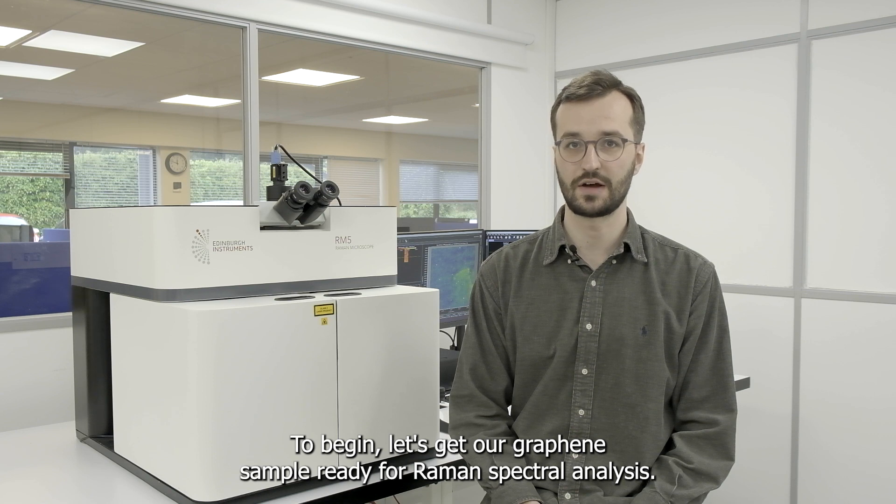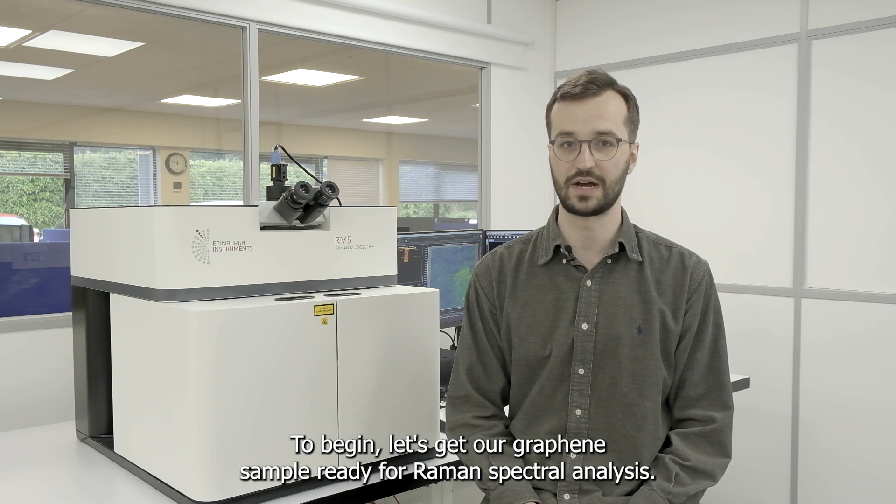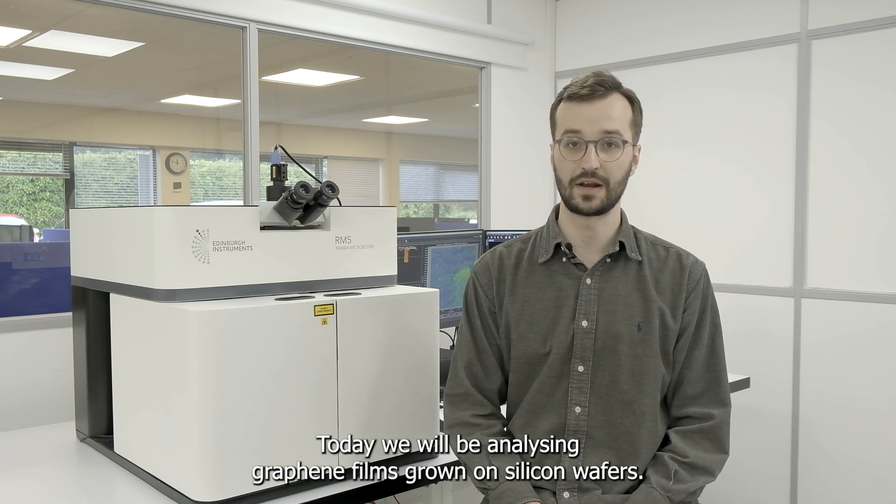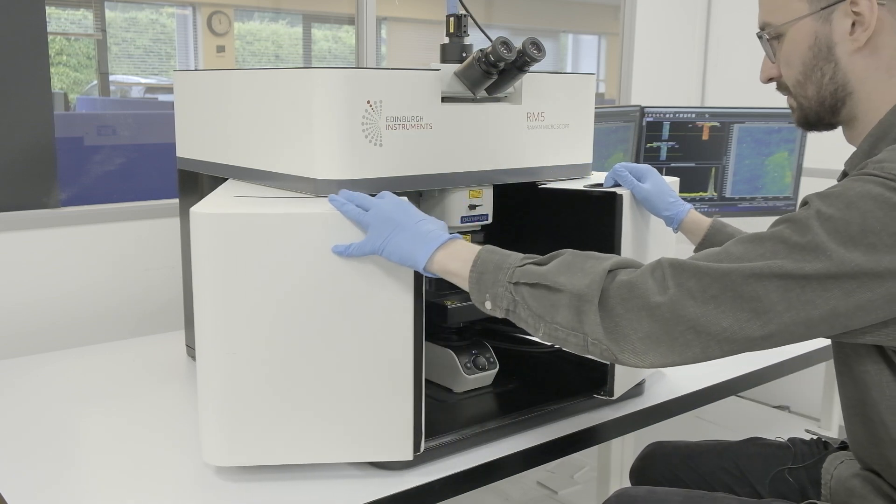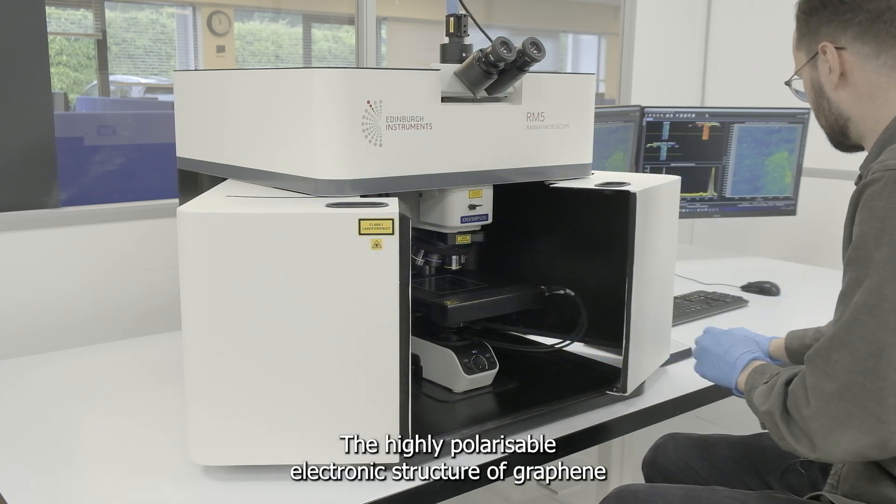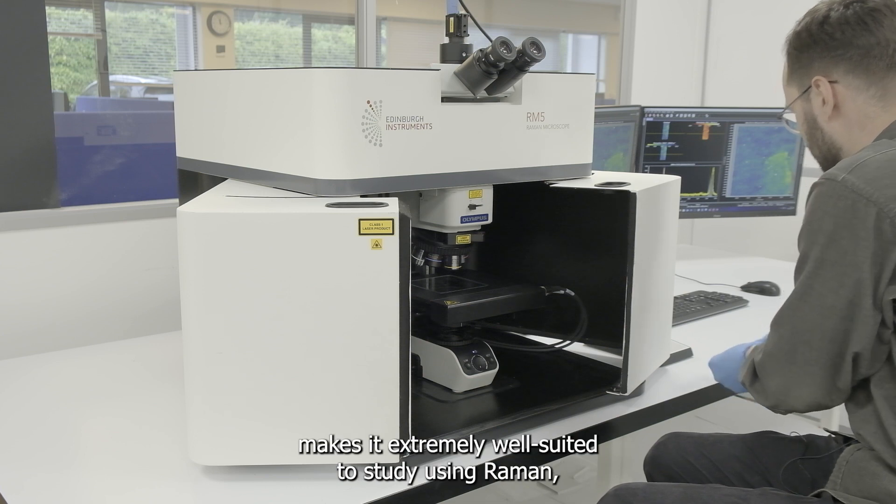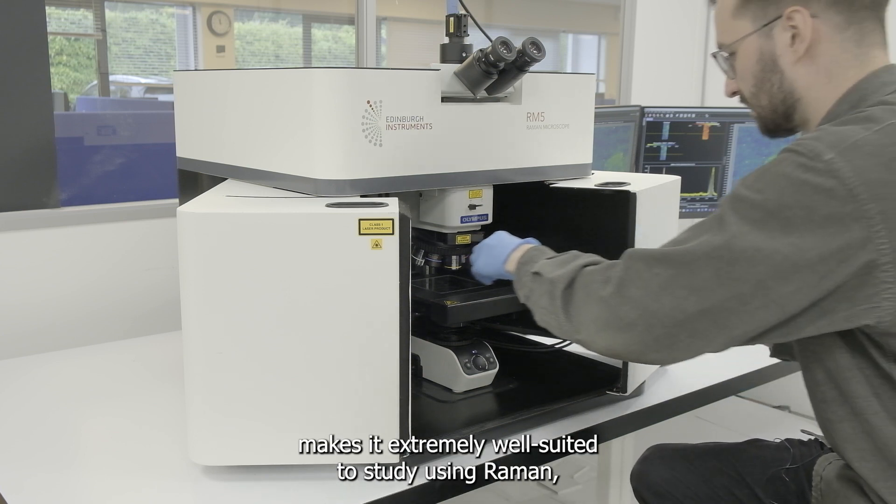To begin let's get a graphene sample ready for Raman spectral analysis. Today we will be analyzing graphene films grown on silicon wafers. The highly polarizable electronic structure of graphene makes it extremely well suited to study using Raman and the technique can provide high levels of information about the material rapidly.